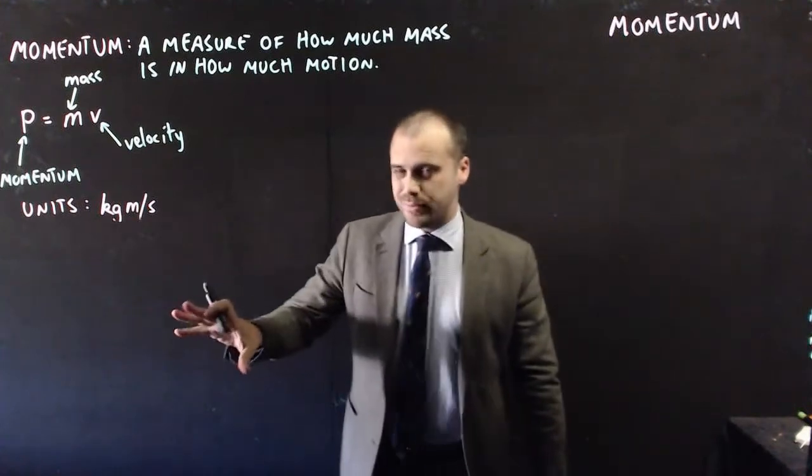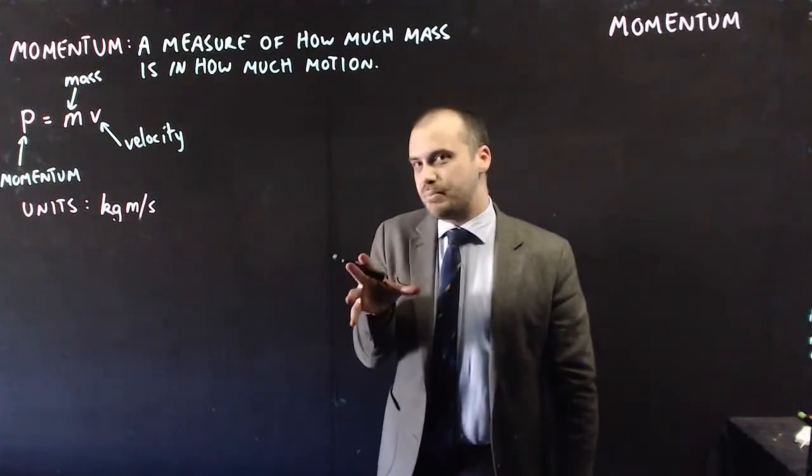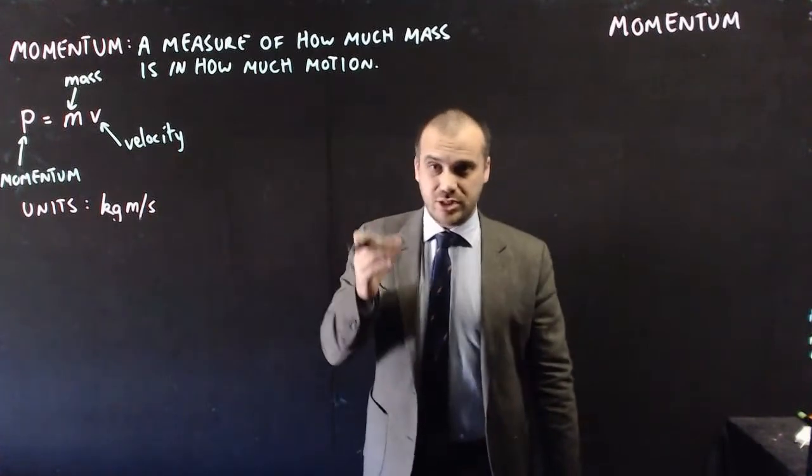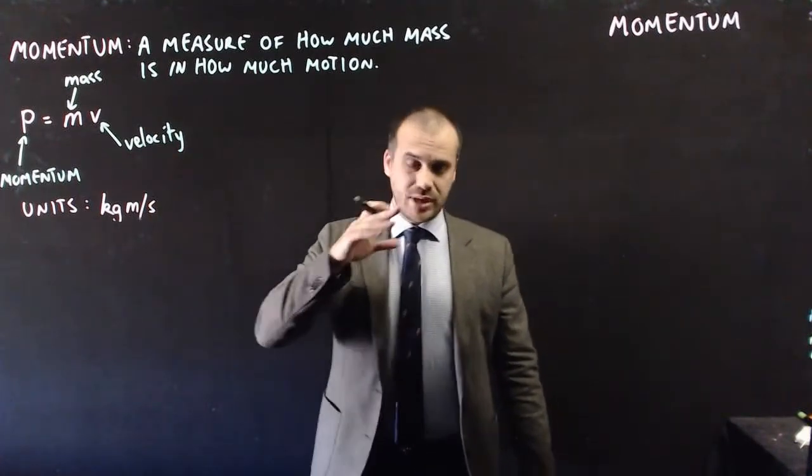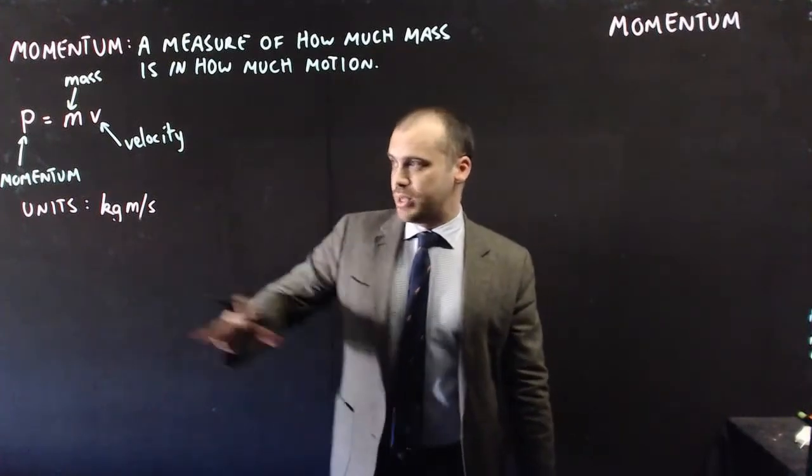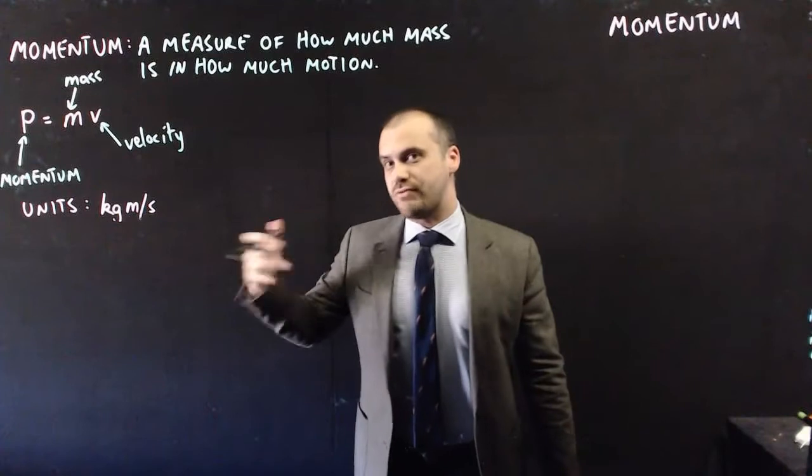Now, in those previous two examples, we dealt entirely with numbers. But remember that a velocity is a vector quantity. It's an arrow. It's speed and direction together. So we can calculate momentum as a vector as well.